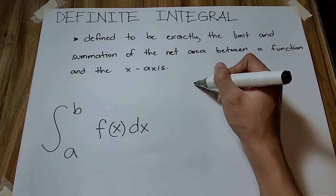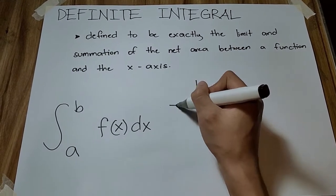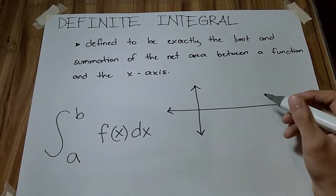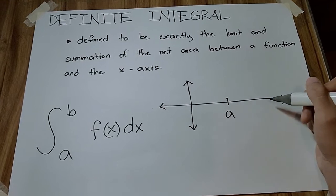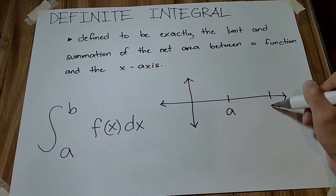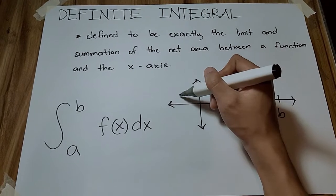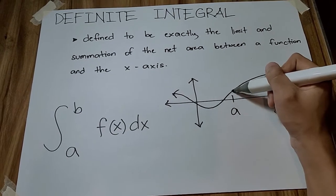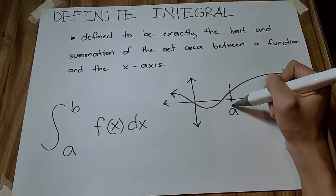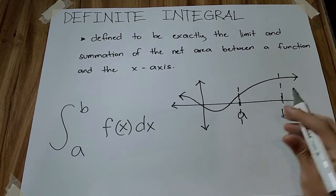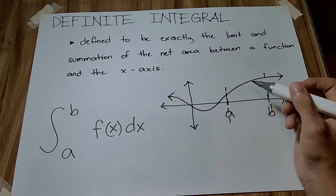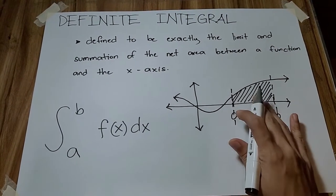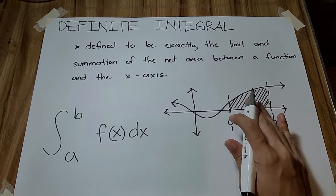When we look at the graph, it will look like this for example. Let's say this will be a, the lower limit, and this will be the upper limit. And the curve looks like this. Between this lower limit and upper limit is the area of your problem, and this is what we are trying to find when we are solving for definite integral.